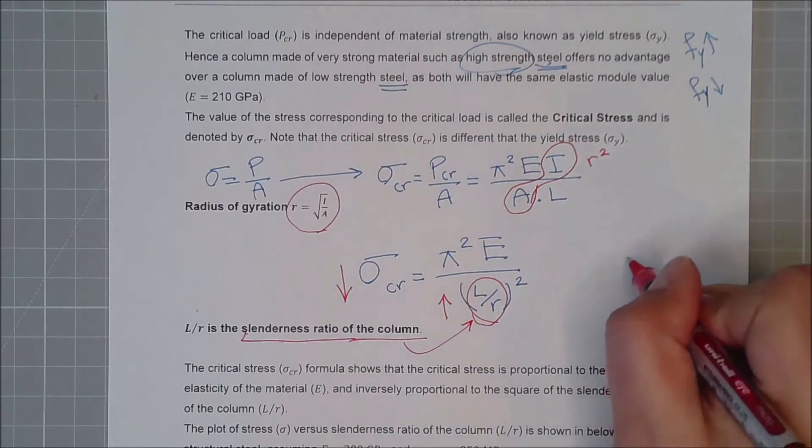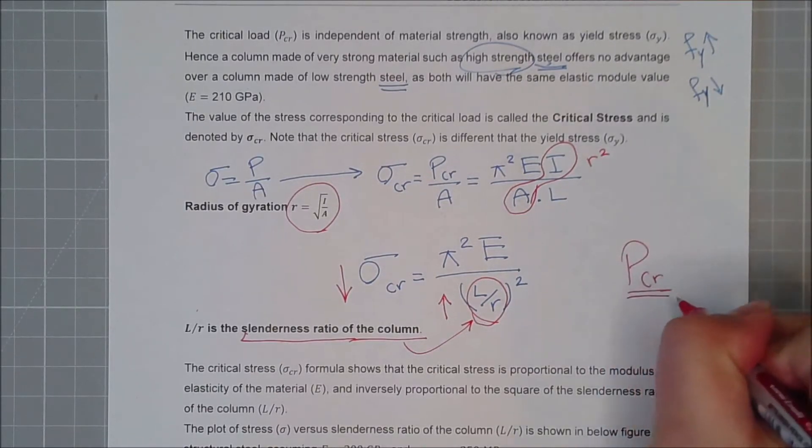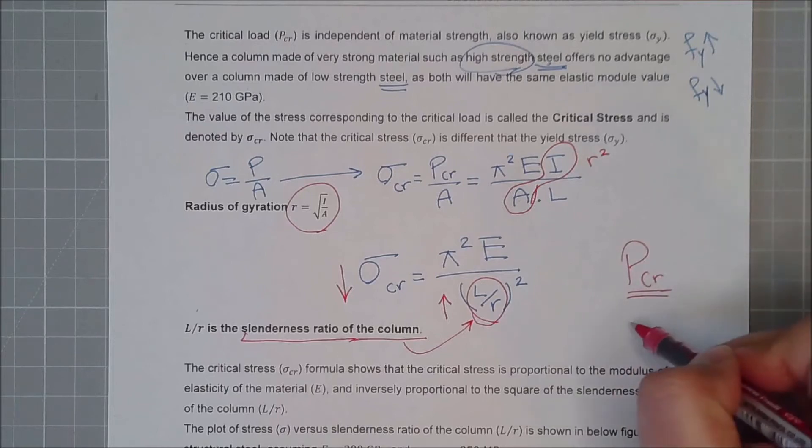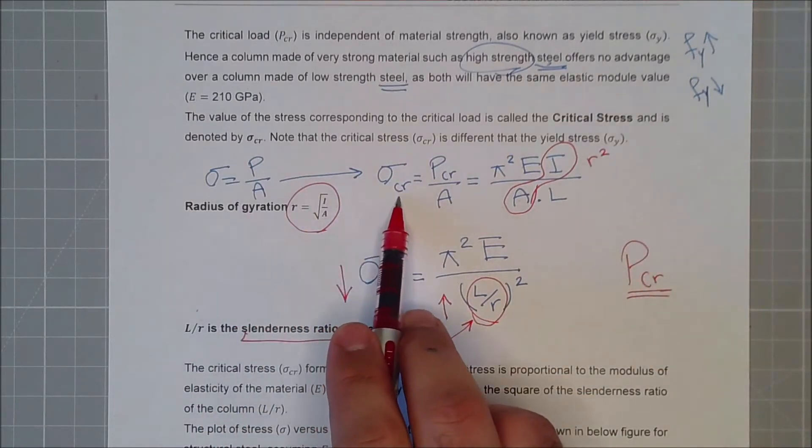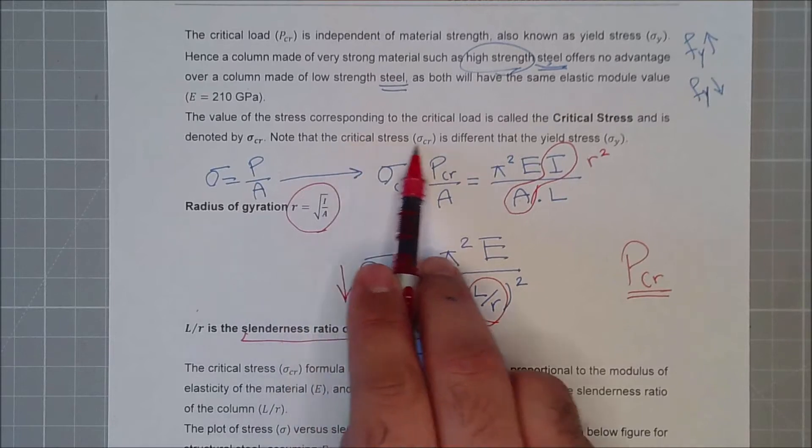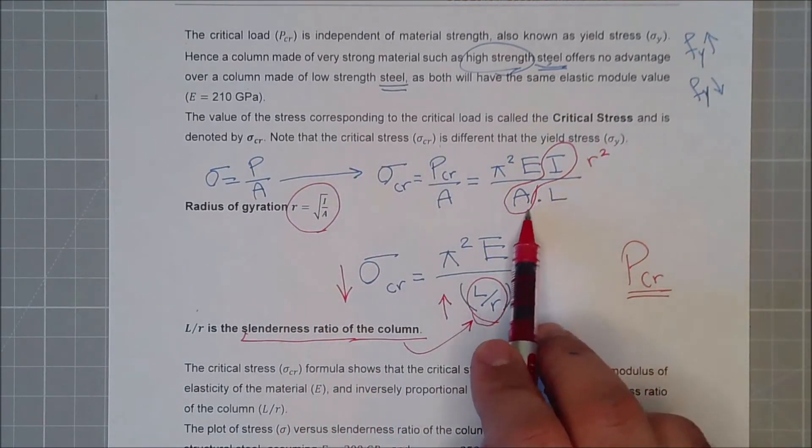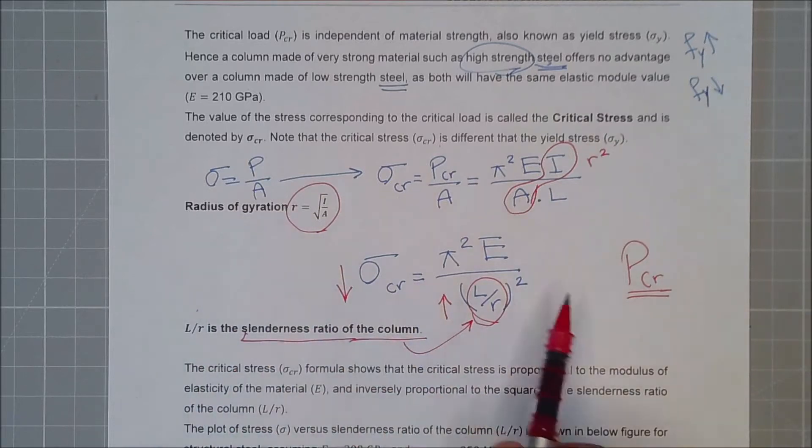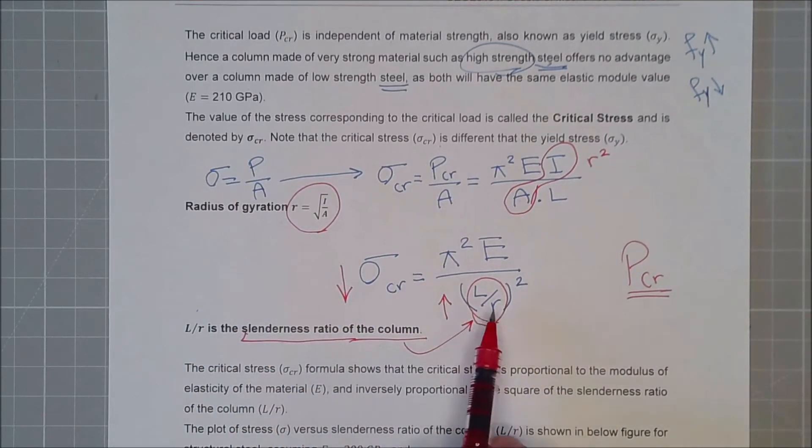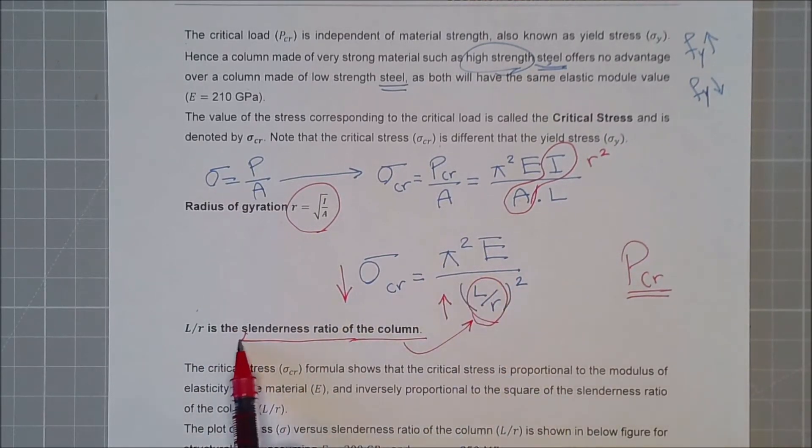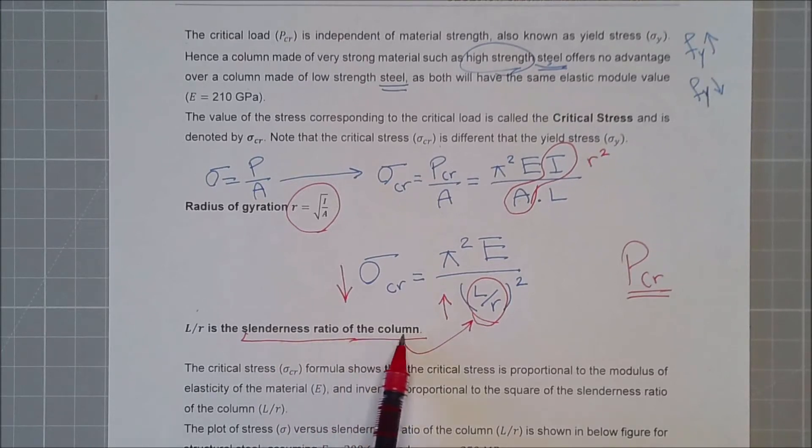So we have proven how to solve for pCr. Then you used pCr to calculate the critical stress. And then we just replaced these two with the radius of gyration, and we came up with this. This ratio, remember, is called the slenderness ratio of the column.